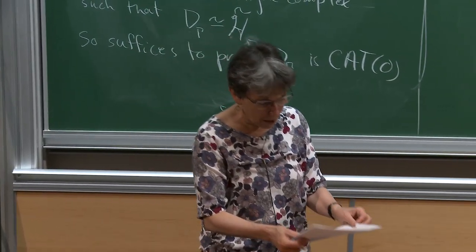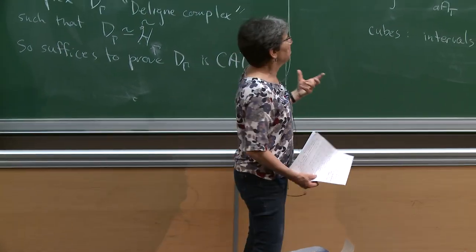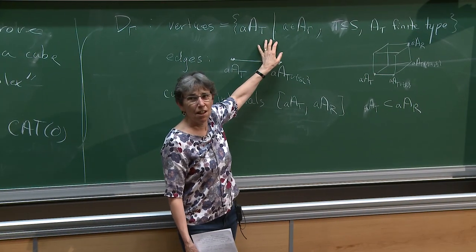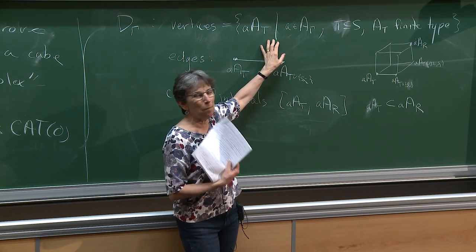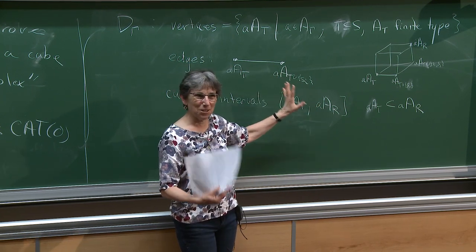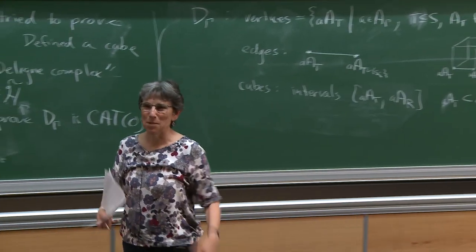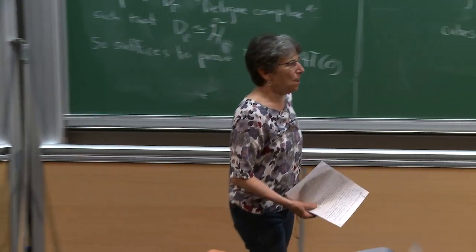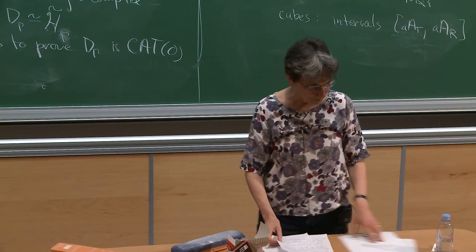There is another way to describe this as a simplicial complex - just think of it as a partially ordered set and take the geometric realization. But that description isn't going to help us; we really need the cubical description to do anything with this. The question is going to be: when is D_gamma CAT(0)? The beginning of that question is on your exercise sheet. This complex will play a central role in the second half of the talk.